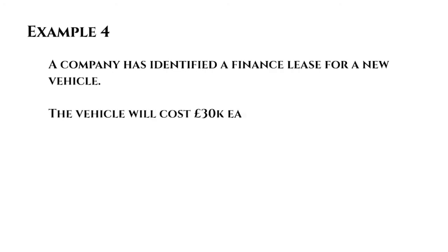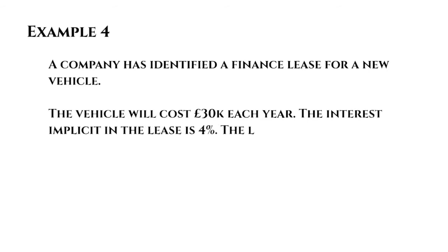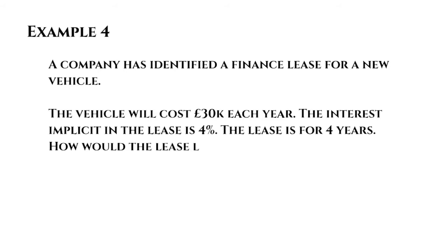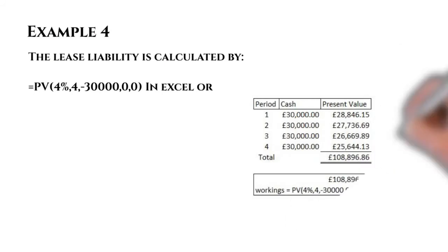Now example four: a company has identified a finance lease for a new vehicle. The vehicle will cost £30,000 per year, the interest implicit in the lease is 4%, and the lease is for four years. To calculate the lease liability, we need the present value. Using Excel: =PV(4%, 4, -30000, 0, 0), which gives £108,896.86 — recognised as both the asset and the lease liability. Split out year by year, the present values are: £28,846 in year one, £27,736, £26,669, and £25,644 in year four.